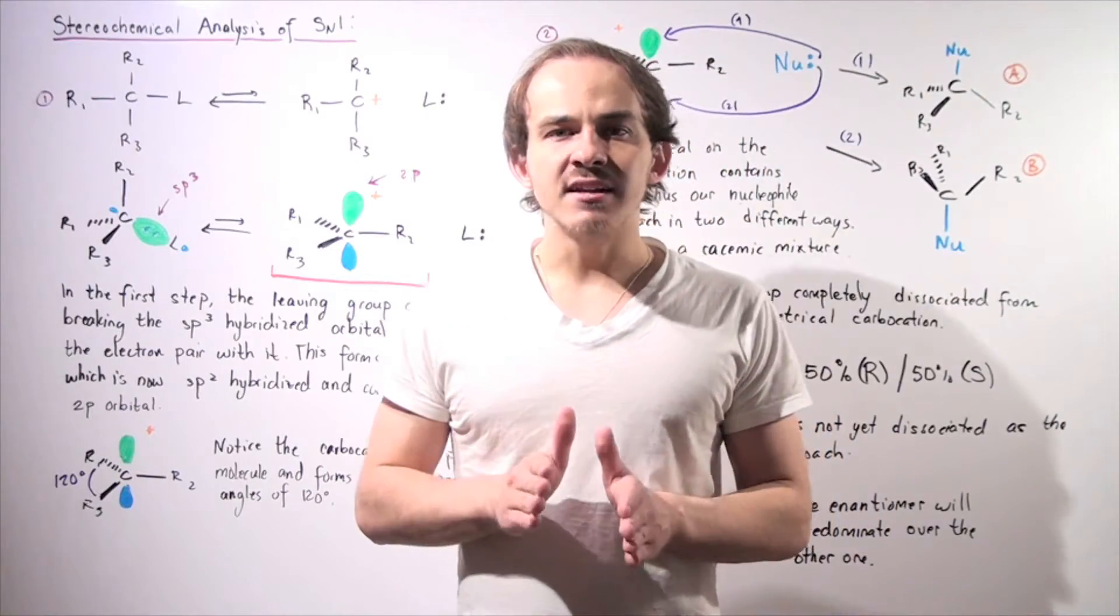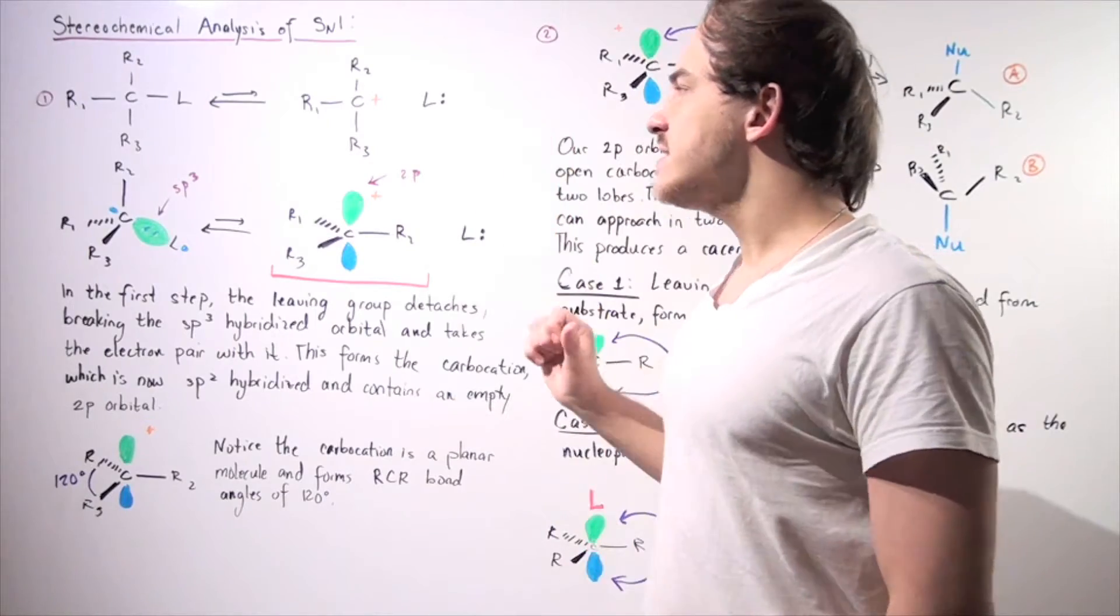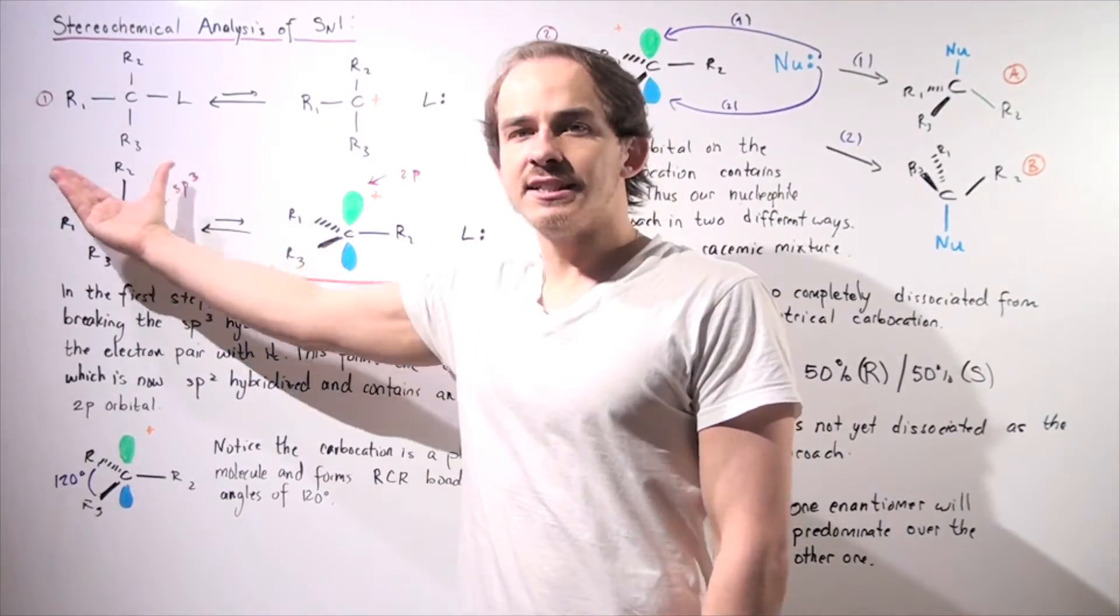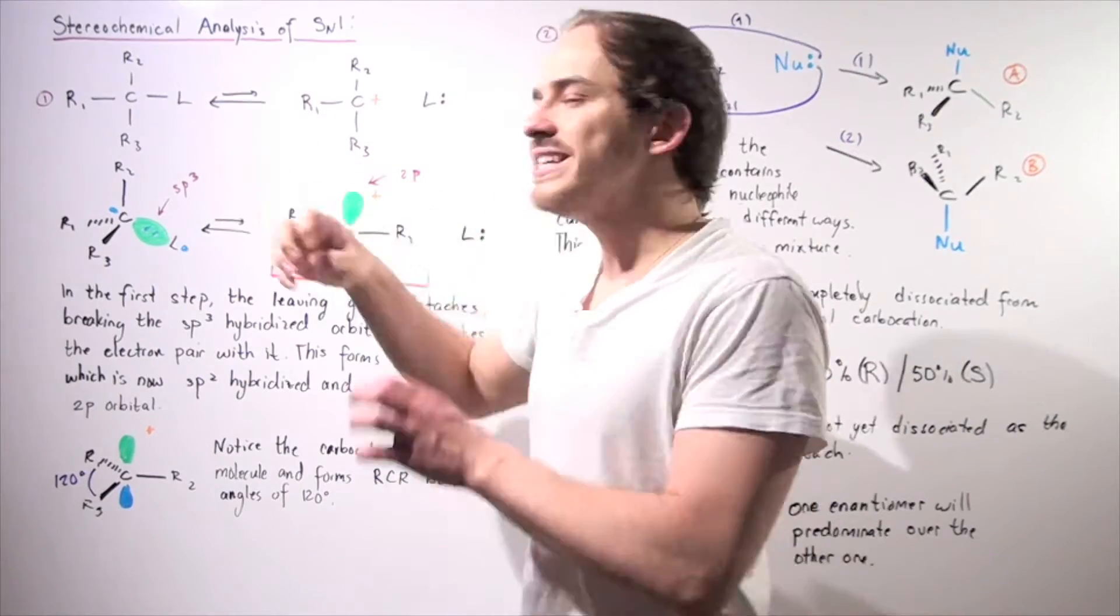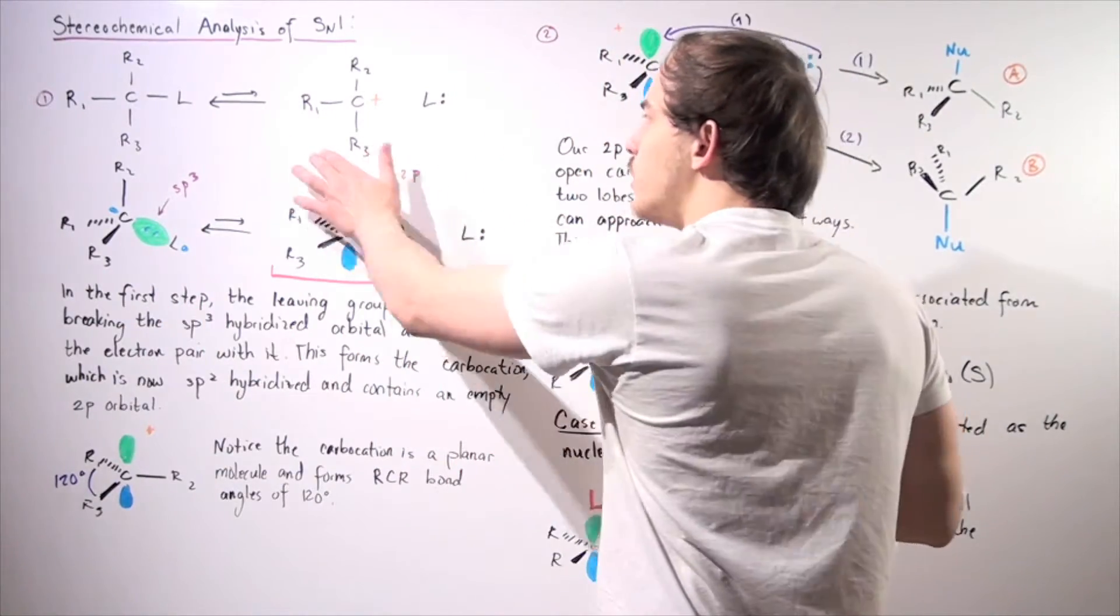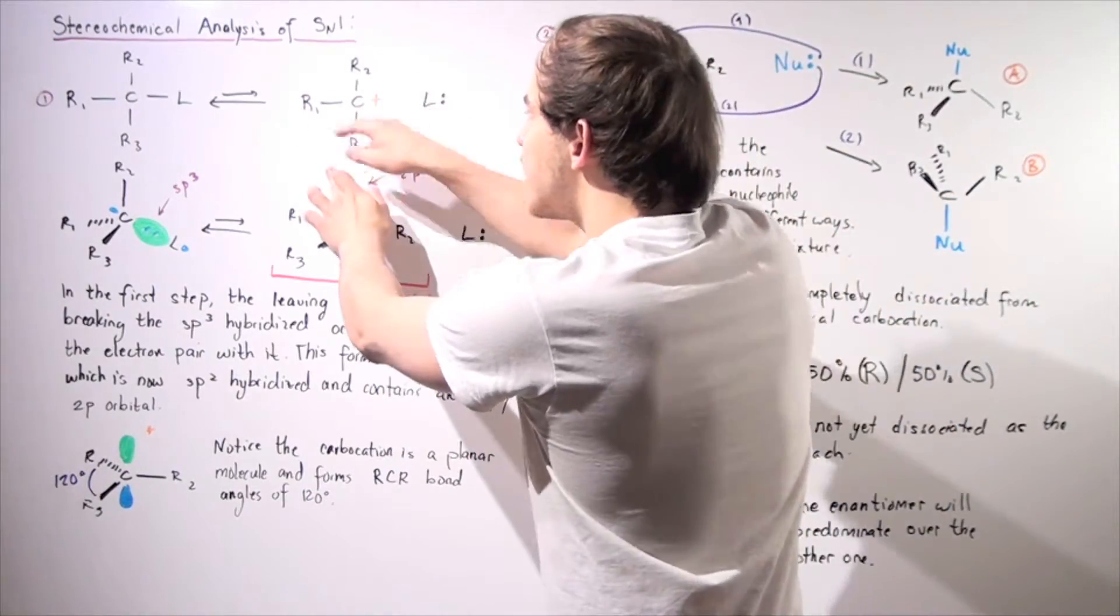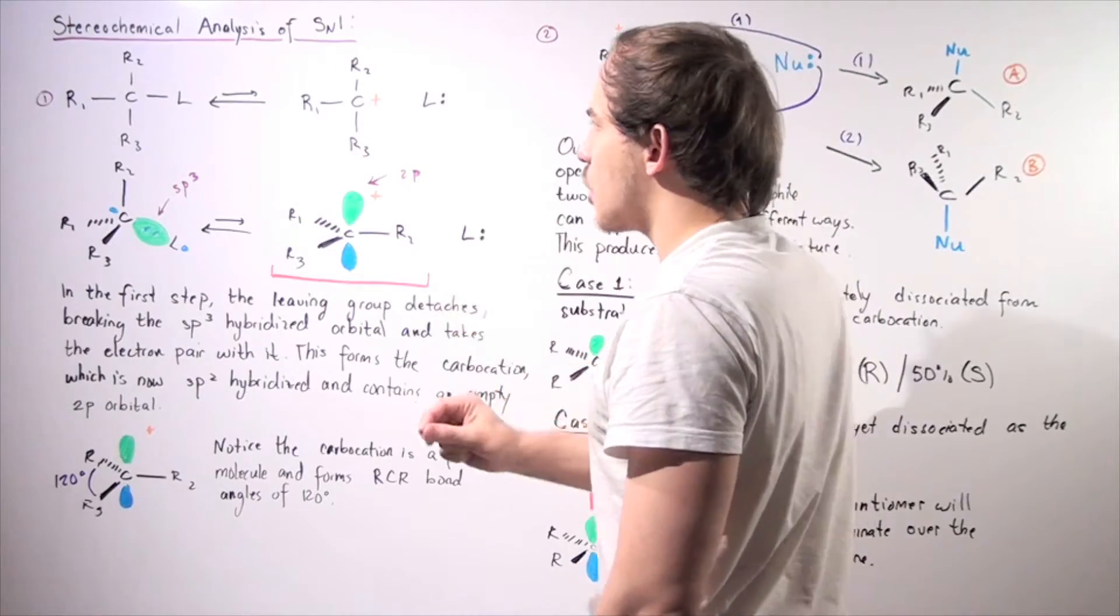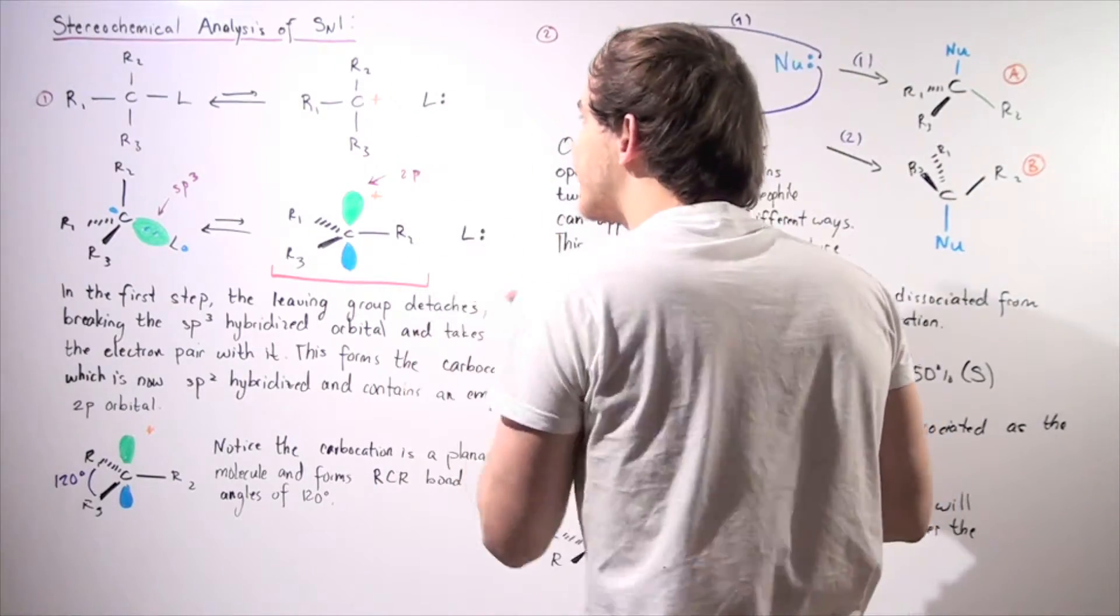Let's begin by analyzing our first step, the ionization step. In this step, we begin with our reactant that contains our leaving group. And this leaving group detaches, ionizes by itself, forming the following two intermediates. So we have the two products, our carbocation, which has a positive charge on the carbon, and our leaving group, which usually has a negative charge.